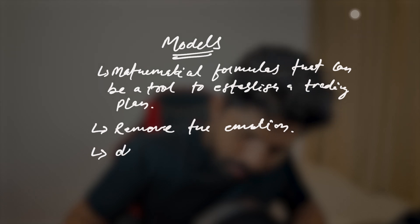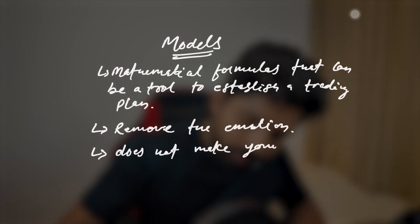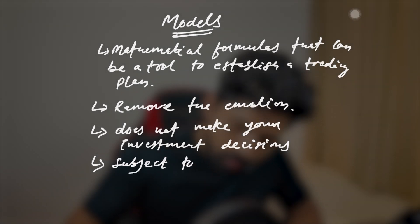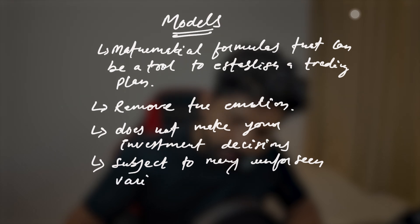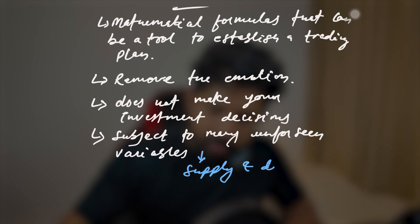These mathematical models can remove emotion from trading, and we know that emotions are the biggest hurdle in a trader's life. However, these models do not make your investment decisions — they just show you a path and how you can get possible outcomes. The decisions are taken based on the inputs and outputs. Also, option prices are subject to many unforeseen variables, one of them being supply and demand.